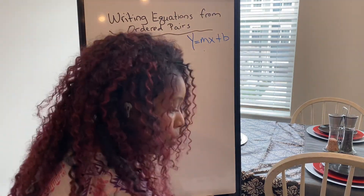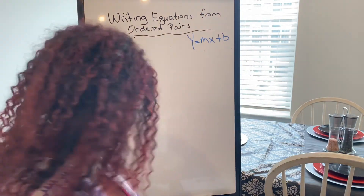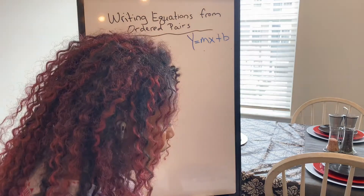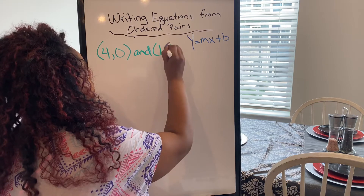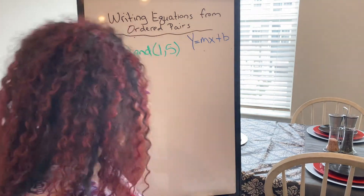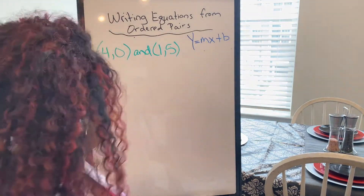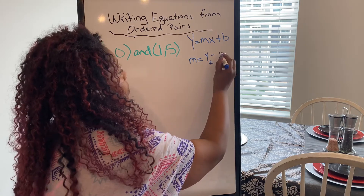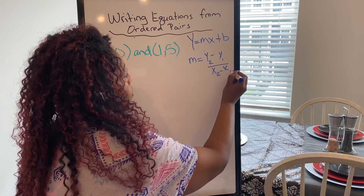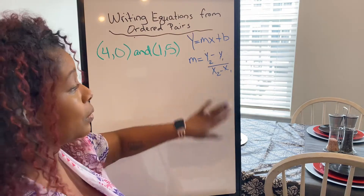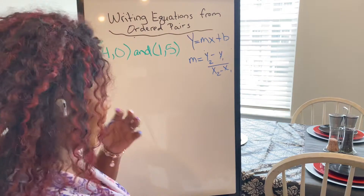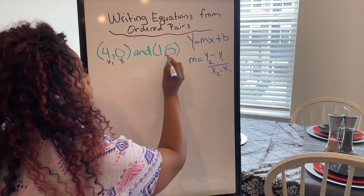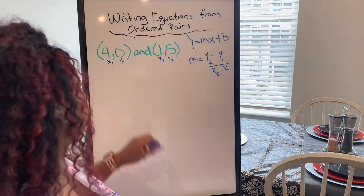So let's say they gave me ordered pairs of four and zero, and one and five. I am going to use the formula: slope equals y2 minus y1 over x2 minus x1. Remember, this is nothing new — this is just review, we've done this. So I need to fill these things out. This is my first set of points, so this is my x1 and this is my y1. This is my second set of points, so I'm going to label that x2 and y2. We did this last week when we talked about giving it a last name.